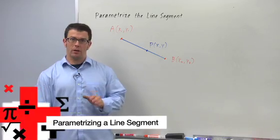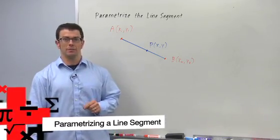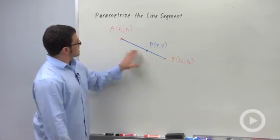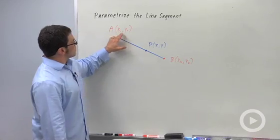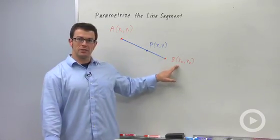I want to talk about how to get the parametric equations for a line segment. Let's start with a line segment that goes from point A (x1, y1) to point B (x2, y2).